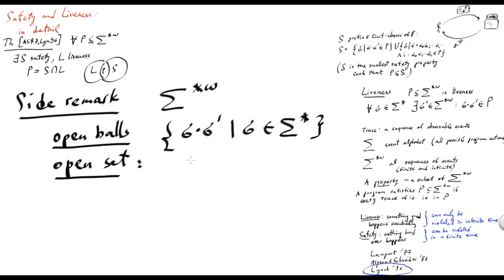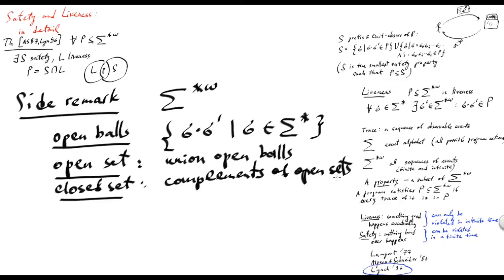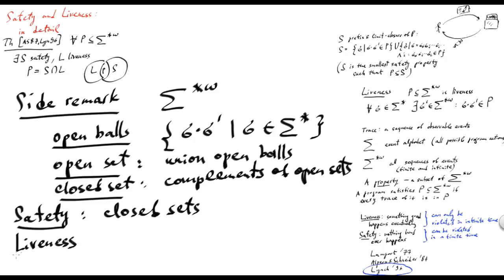An open set would be a finite and infinite union of open balls, and a closed set would be the complement of an open set. In this topology, it turns out the safety property would naturally be closed sets, and a liveness property would be the dense sets — the sets such that every open ball would contain some live execution. This indeed immediately follows from the definition of an open ball: for whatever prefix we start, we would have an extension, which means some element in the neighborhood which is live.